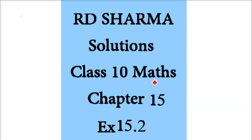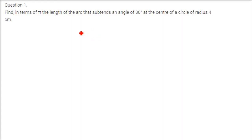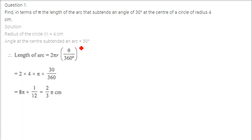We are taking RD Sharma solutions class 10 maths chapter 15 exercise 15.2, and this is related to area of circles. Find, in terms of pi, the length of the arc that subtends an angle of 30 degrees at the centre of a circle of radius 4 cm.